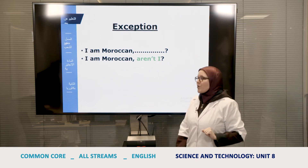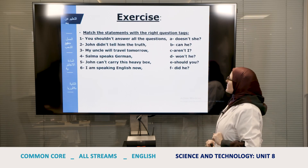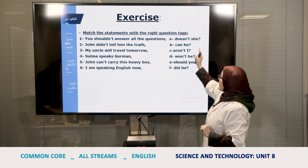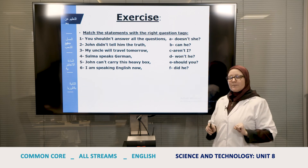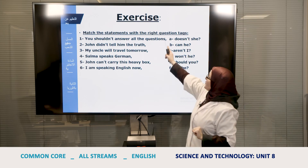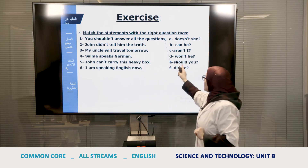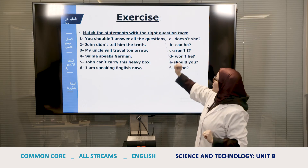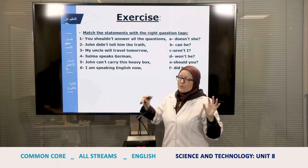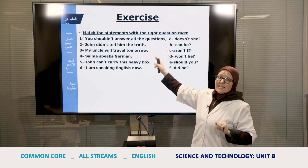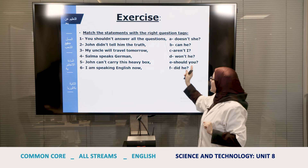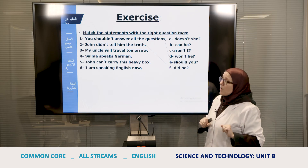Now here comes the time for practice. For the first exercise, match each sentence with the right question tag. Correction: for the first one, 'shouldn't' becomes 'should' — 'you shouldn't answer all the questions, should you?' The second one: 'John didn't tell him the truth' — negative form, so 'didn't' becomes 'did' and 'John' is replaced with 'he': 'did he?' The third one: 'my uncle will travel tomorrow' — 'will' becomes 'won't' and 'my uncle' becomes 'he': 'won't he?'